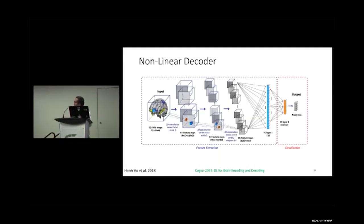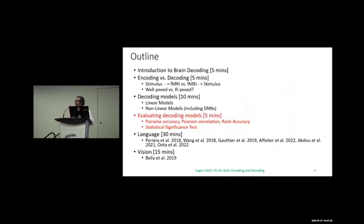For non-linear decoder models: you can give a whole-brain volume as input to any CNN. Since fMRI is a 3D volume, giving the 3D volume to a CNN allows the model to predict the category — whether it's related to a cat, dog, or something else. These are deep CNNs.